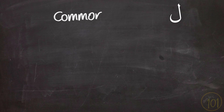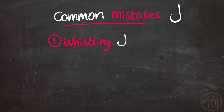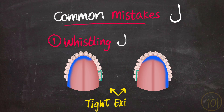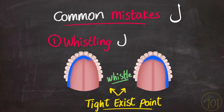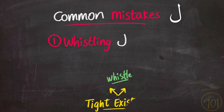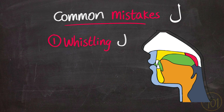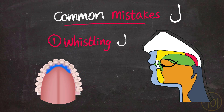What common mistakes should we avoid with Laam? The first common mistake is the whistling Laam. This is when the Laam is produced from only the sides of the tongue, making the makhraj much tighter than it should be, which causes a faint whistling sound to come out along with the Laam. The solution is to press the front edge of the tongue in the proper spot, allowing air to escape from both sides.